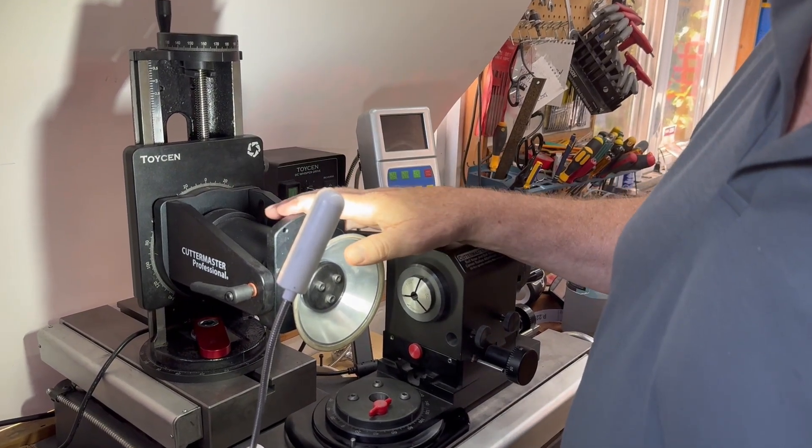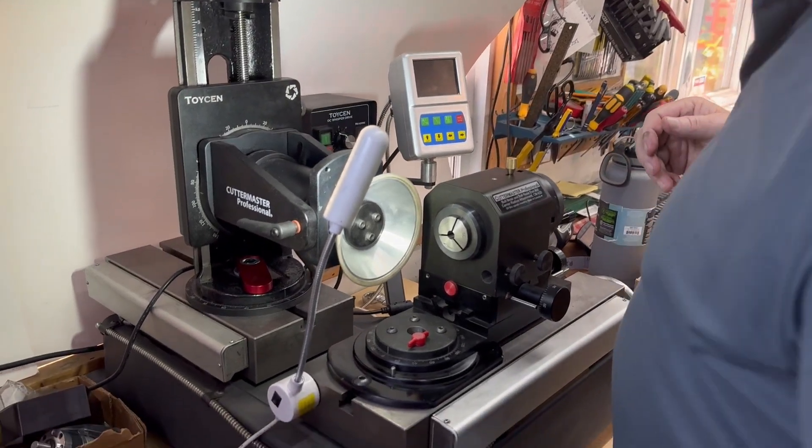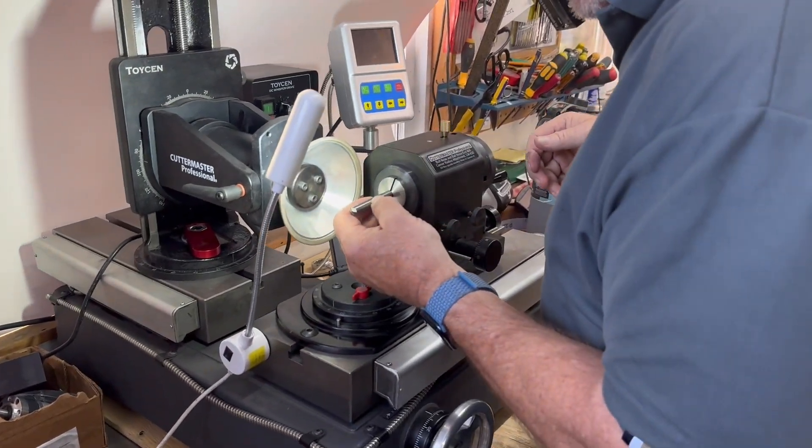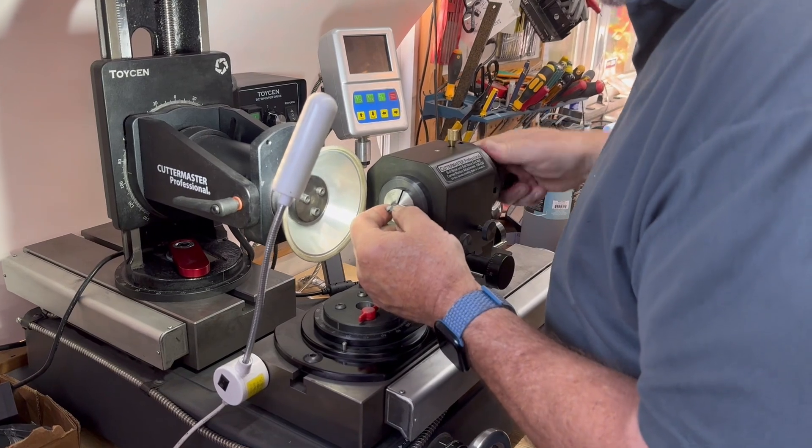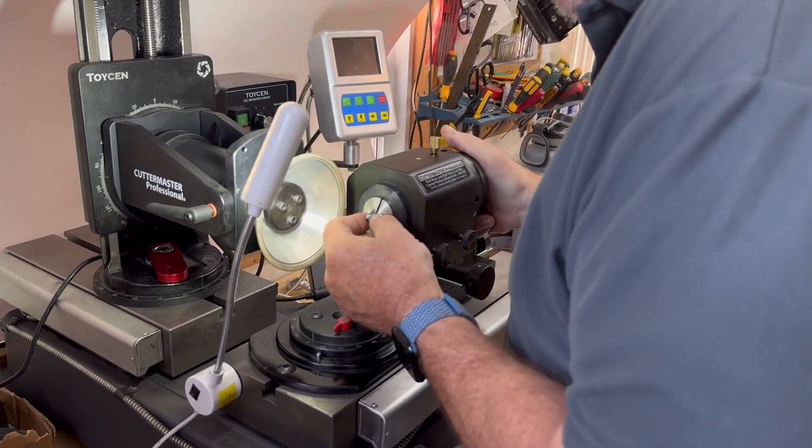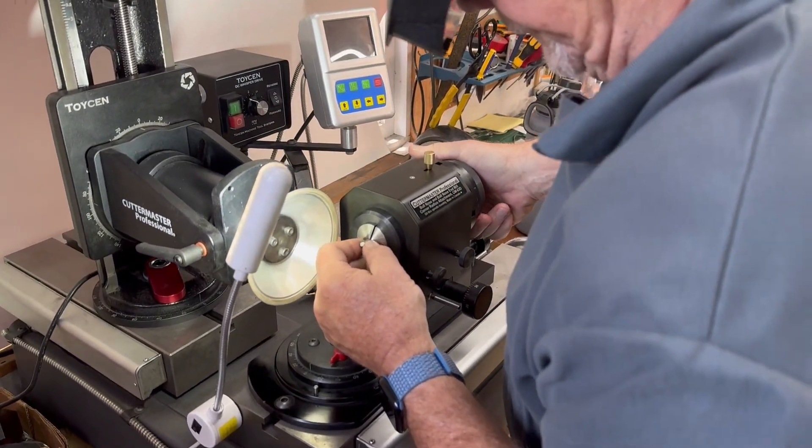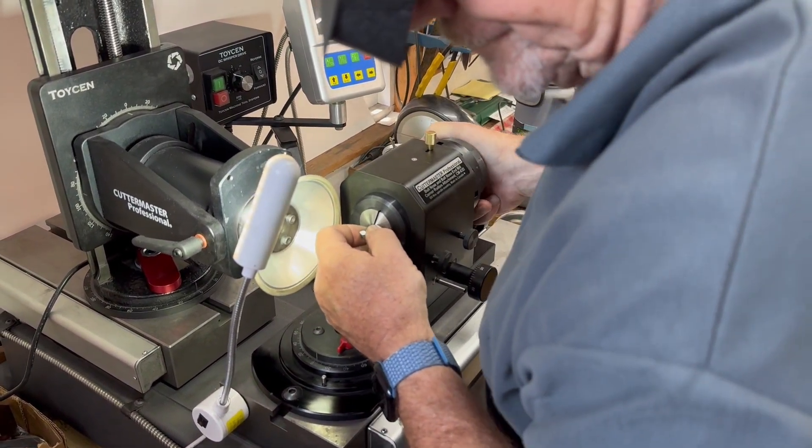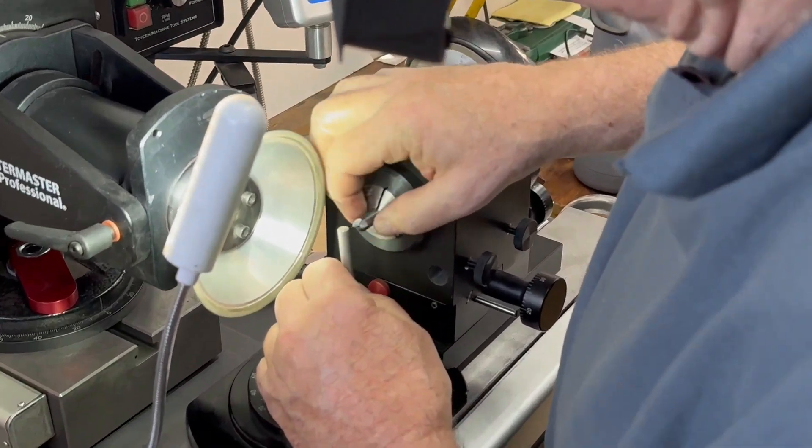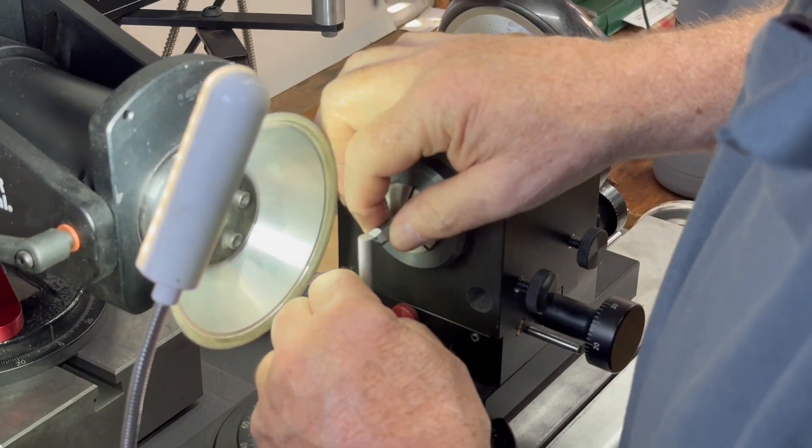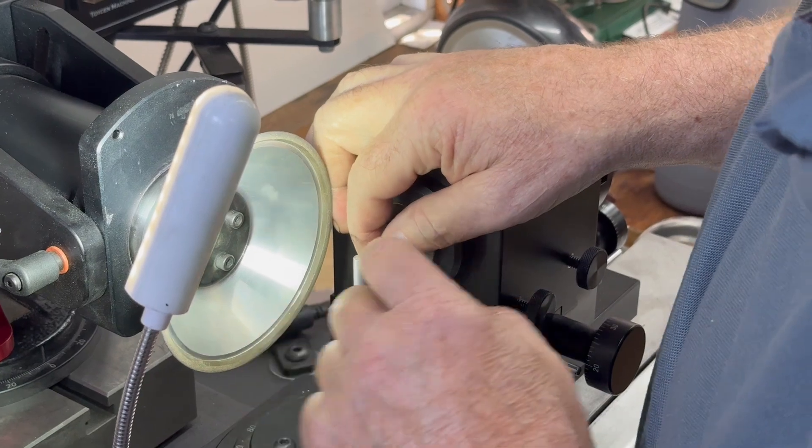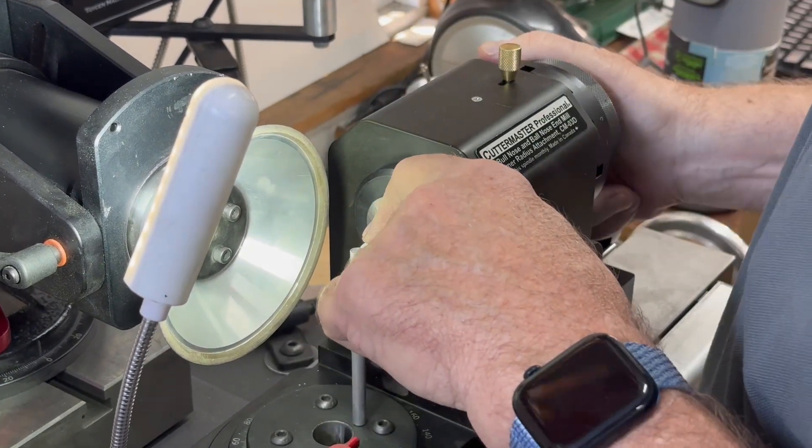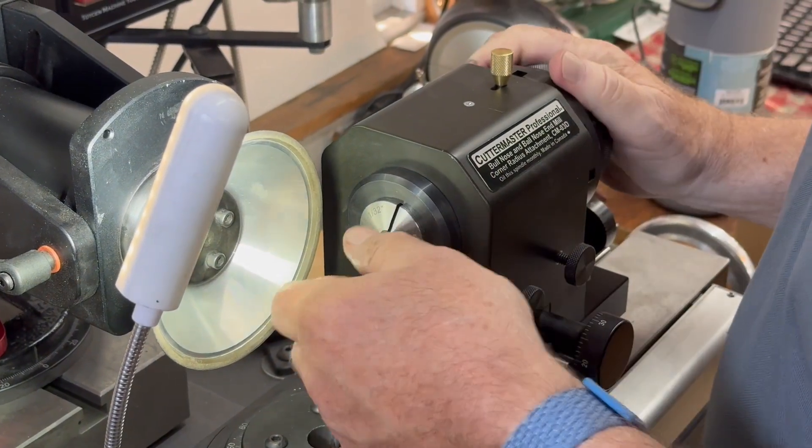Load the tool. You want to bring the collet up so that it starts to get tight. And then you use the tool setter to set the height. Tighten the collet.